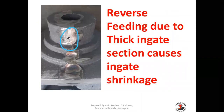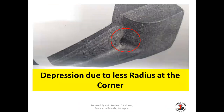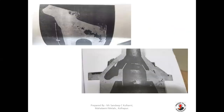Reverse spinning due to thick ingate section causes ingate shrinkage, so you have to maintain your width of ingate properly to avoid reverse fitting of the metal. To avoid this ingate shrinkage, depression due to less radius at the corner — you have to maintain proper radius at the junction to avoid such type of depression in the casting.